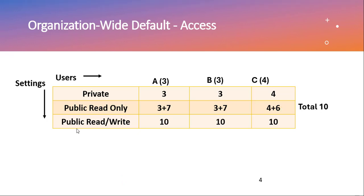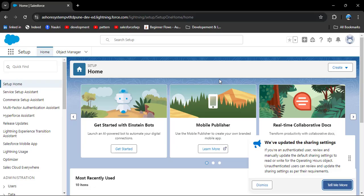If the OWD is public read-write, all users can see all other users' records and they can also modify them — meaning they have both read and write permissions. Now let's jump to the org and demonstrate how to apply OWD access to an object.